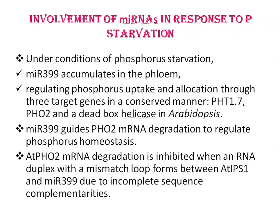Next is the involvement of microRNAs in response to phosphorous starvation. MicroRNAs are a class of non-coding RNAs that regulate gene expression; they are about 22 bases long. Under conditions of phosphorous starvation, miR399 accumulates, regulating phosphorous uptake and allocation through three target genes in a conserved manner: PHT1.7, PHO2, and a dead box helicase in Arabidopsis.